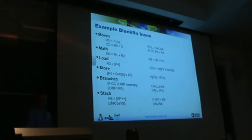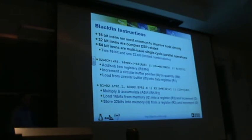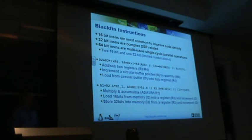Obviously we have branch support — conditional branching, indirect branching, direct calls, indirect calls — and then we have operations to work with the stack, so you can push and pop registers, allocate or de-allocate frames. Most of the instructions are actually 16-bit for code density reasons. Compared to ARM, the code density of Blackfin was significantly higher, because we packed everything into 16-bit. When we want to do complex DSP instructions, we have larger 32-bit instructions to encode all the different operations.